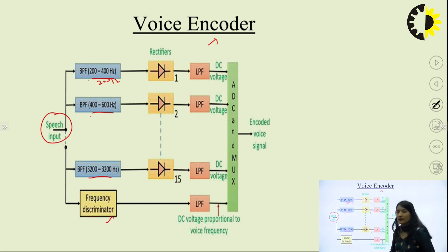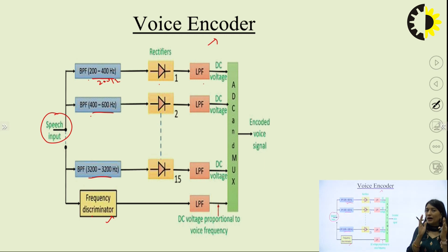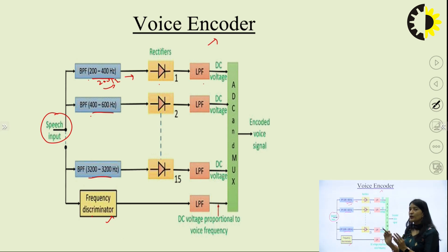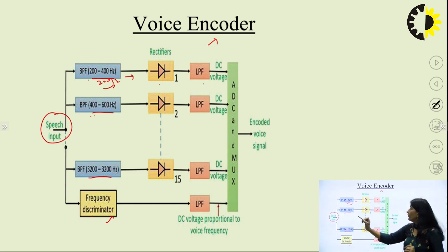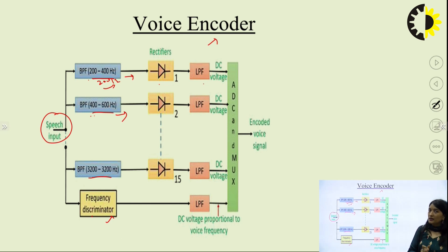Then we have a frequency discriminator, rectifiers, a low pass filter, ADC, and multiplexers. The band pass filter passes the part of information with frequency in the particular range and filters out the rest. Similarly, the part of speech with frequency ranging from 400 to 600 Hz will be passed through the corresponding band pass filter and the other part will be filtered out. Likewise, the corresponding range will be passed through each band pass filter.